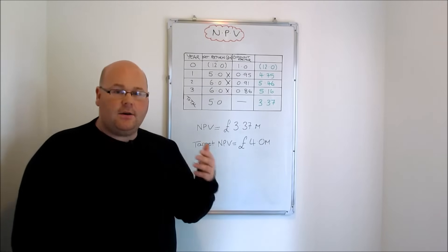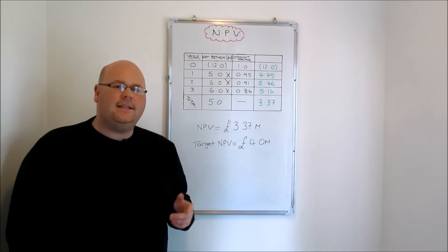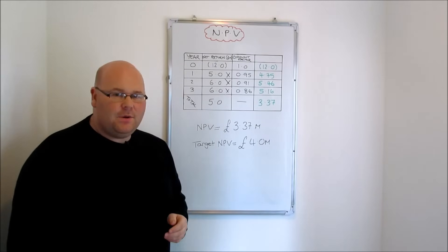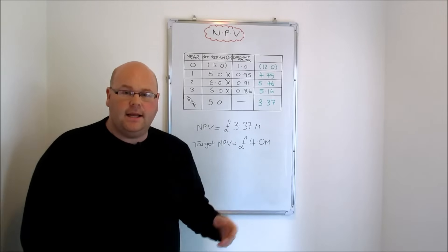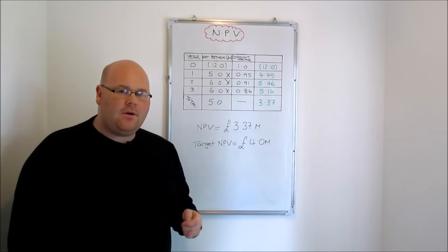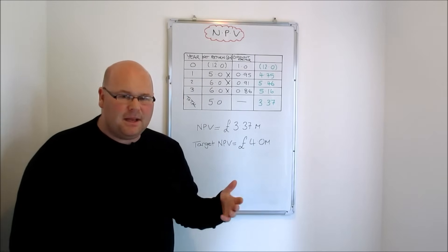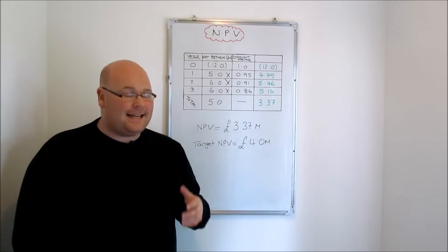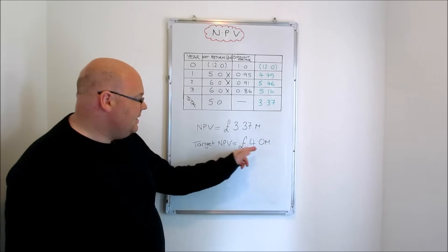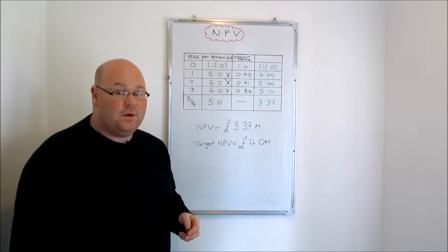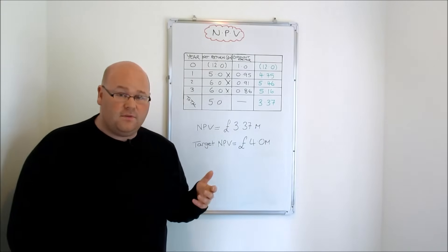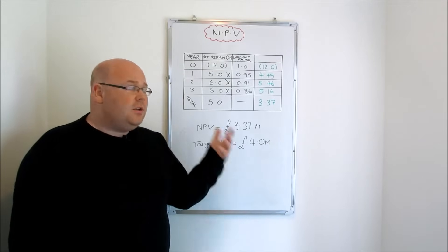NPV is a good method of investment appraisal because it factors time into our returns. However, one criticism lies in the discount factors — accurately predicting how much money will be worth in one, two, three, four, or five years' time is a complicated process. Businesses are at the mercy of the external environment; inflation rates fluctuate, so knowing exactly how much to discount net returns involves some guesswork. We might end up rejecting projects that might actually have been profitable because the discount factors weren't accurate.